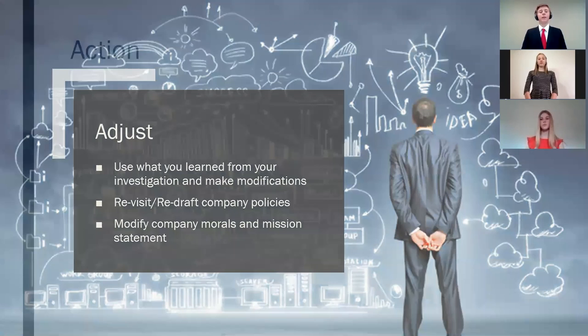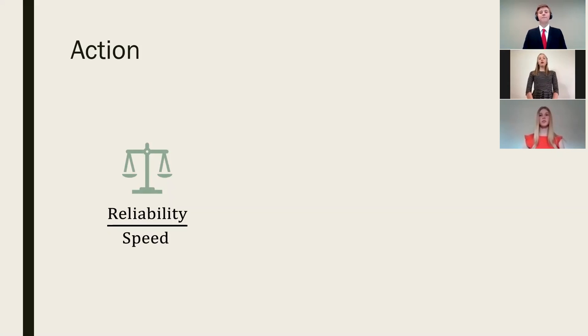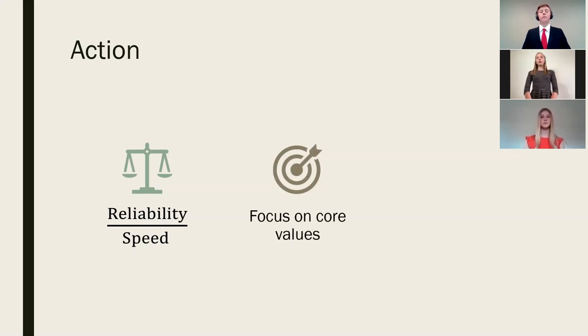Stage four, action. The fourth and final stage of the recovery process is to take action. The first action that should be taken is for the broadcasting firm to create policies to maintain reliability over speed. They should slow down and focus on reliable news. Being the first to publish the news is not as important as giving reliable news that the viewers can trust. It is important that they focus on their core values. Core values are principles that dictate behavior and can help people understand the difference between right and wrong. If broadcasting companies need to revise their core values, they should make it a priority to do so.